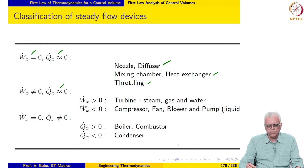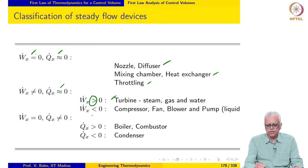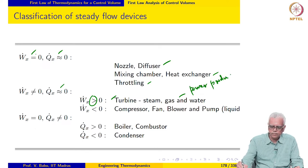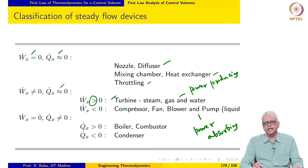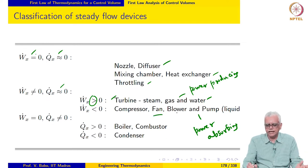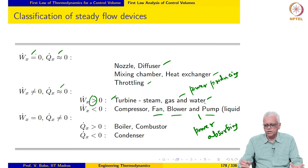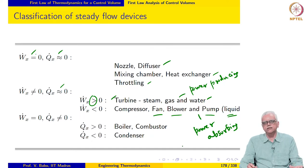There are two types of devices in this category. The first is the turbine, for which W_x dot is positive — it is power producing. Compressors and other devices are power absorbing. Under the category of turbine we may have steam turbines, gas turbines, or hydraulic turbines. In the power-absorbing category we may have compressors, fans, blowers, and pumps.